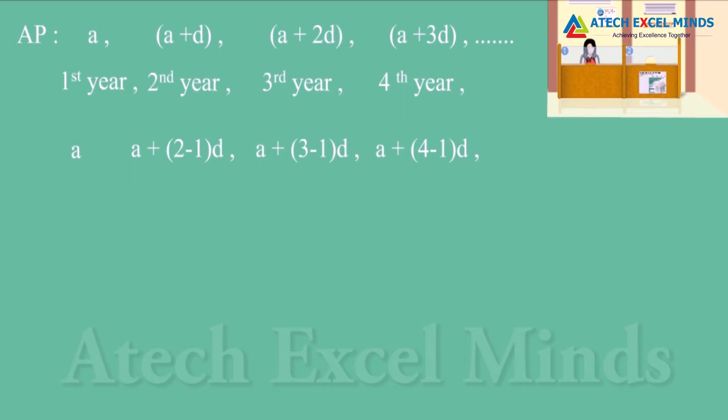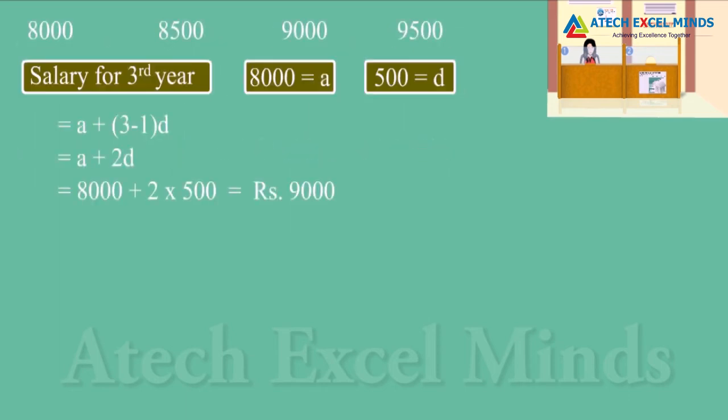Similarly, for fourth year, A plus 3D can be written as A plus (4 minus 1) into D. Let us check if this is true for Rina's salary. Her salary for the third year is equal to A plus (3 minus 1) into D. Upon applying values of A and D, we get salary of Rs. 9,000.